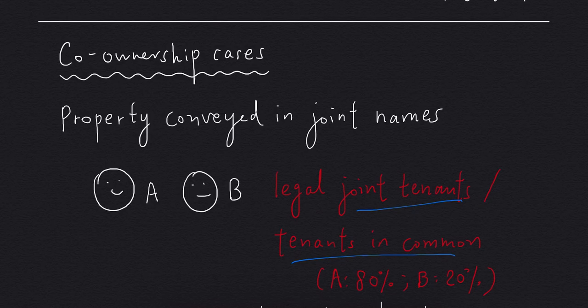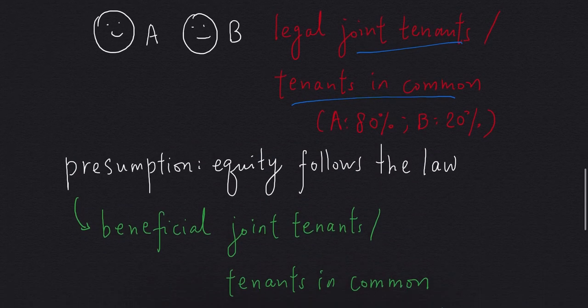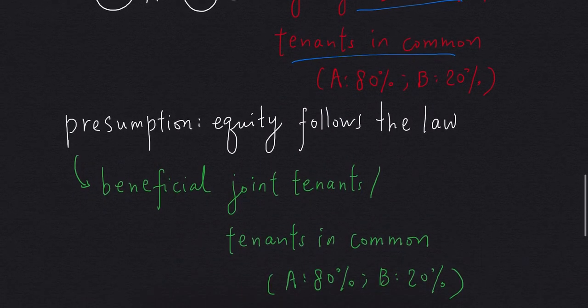Let's say A has 80% of the shares and B has 20%. So for the position in equity, the presumption of equity follows the law applies again. So A and B can be beneficial joint tenants or beneficial tenants in common with the same amount of shares.